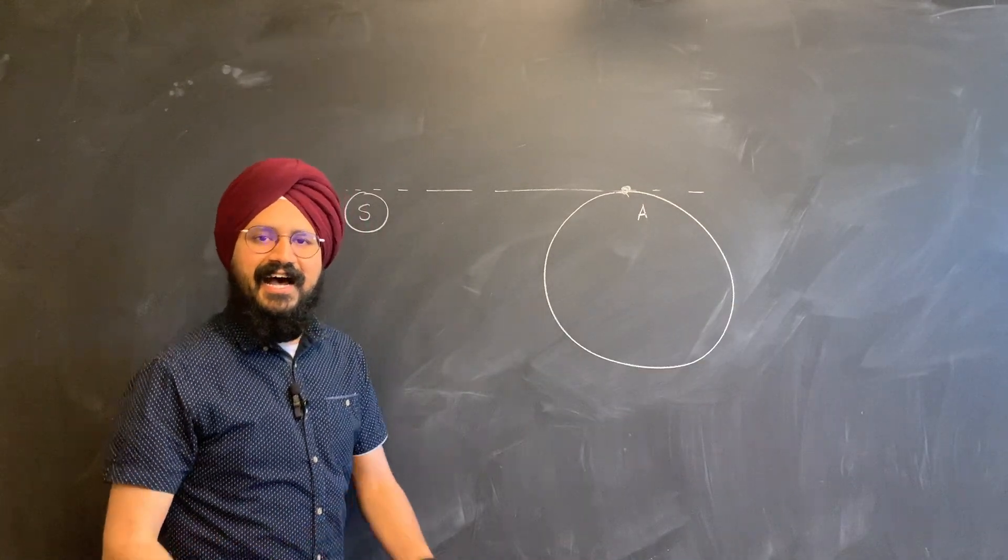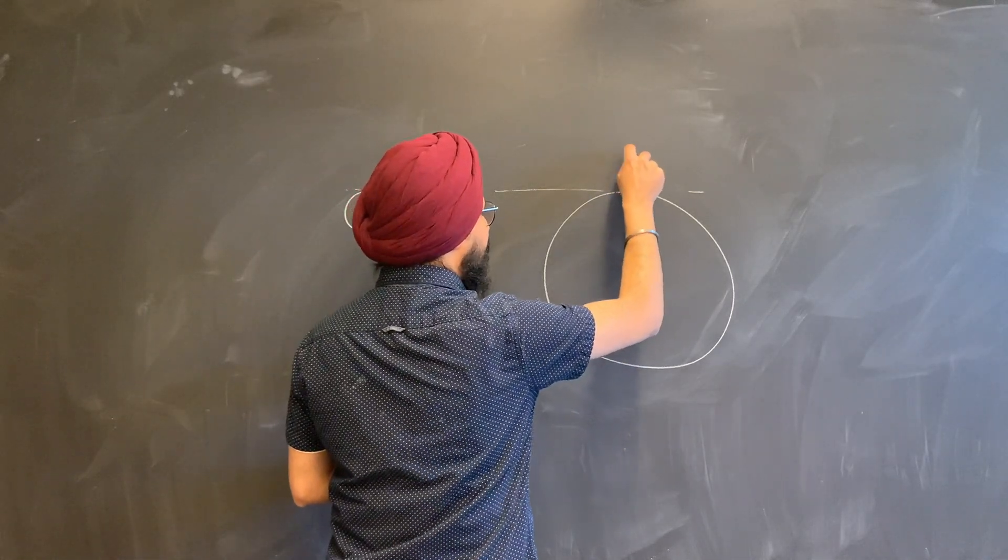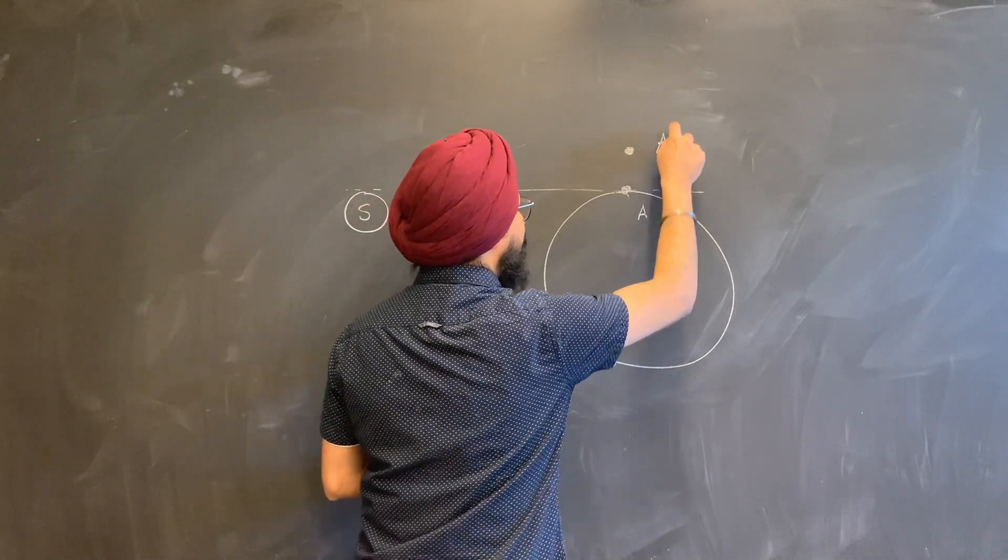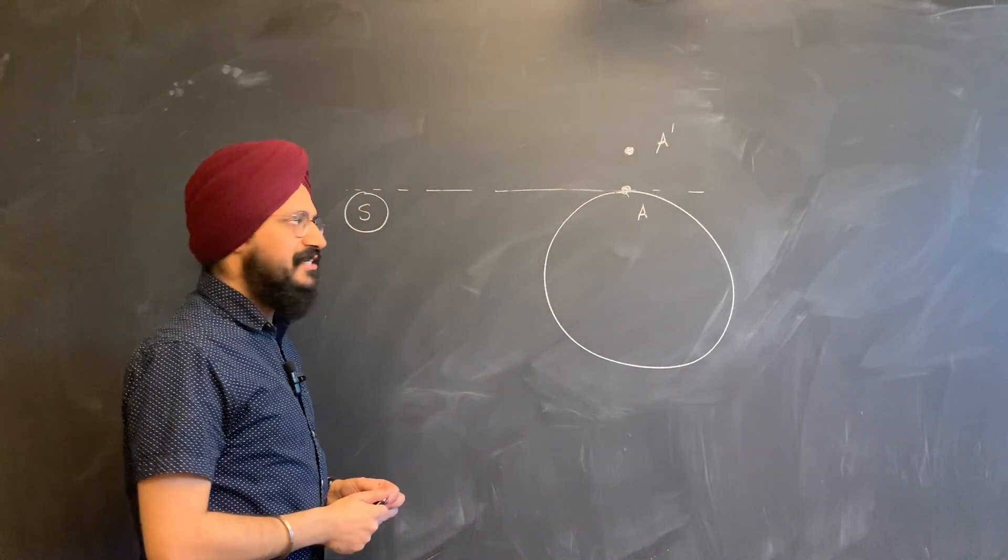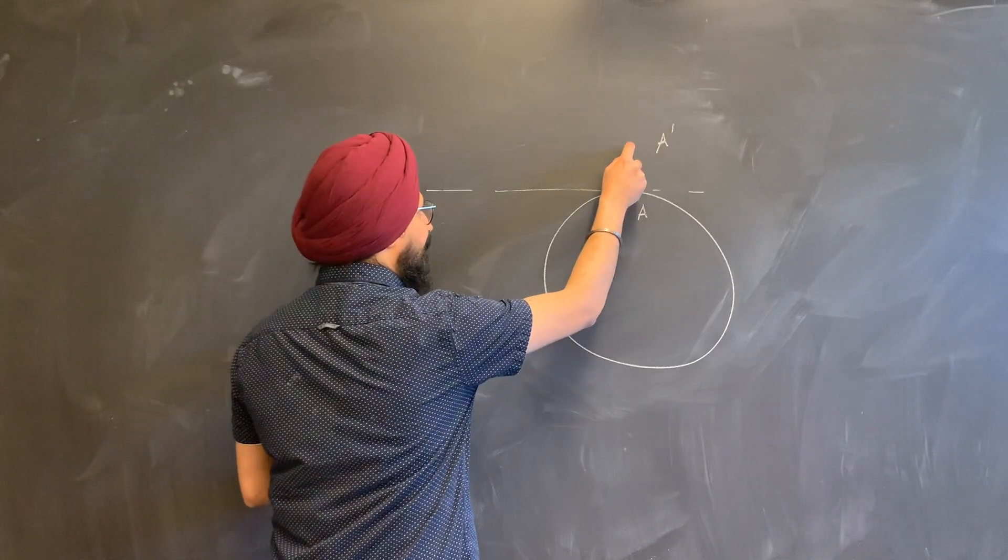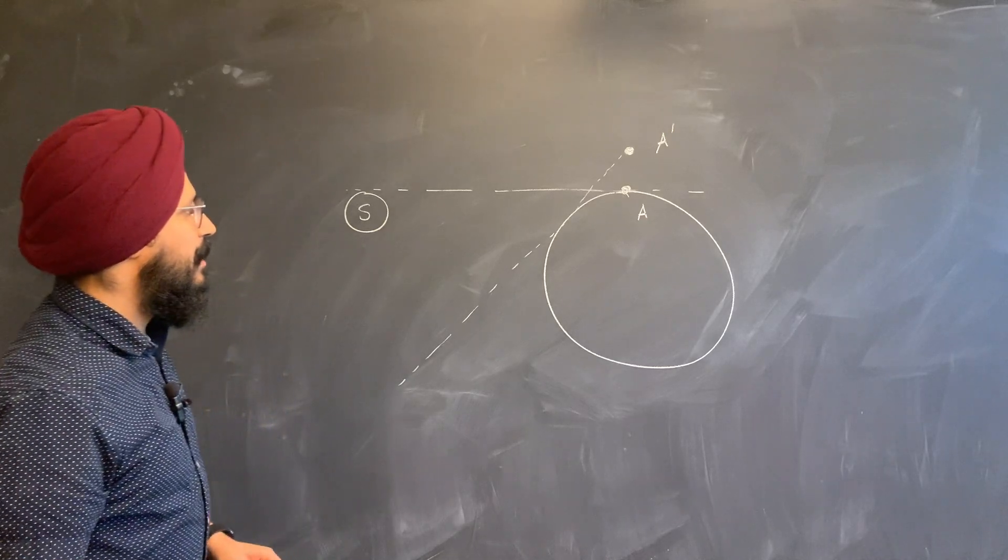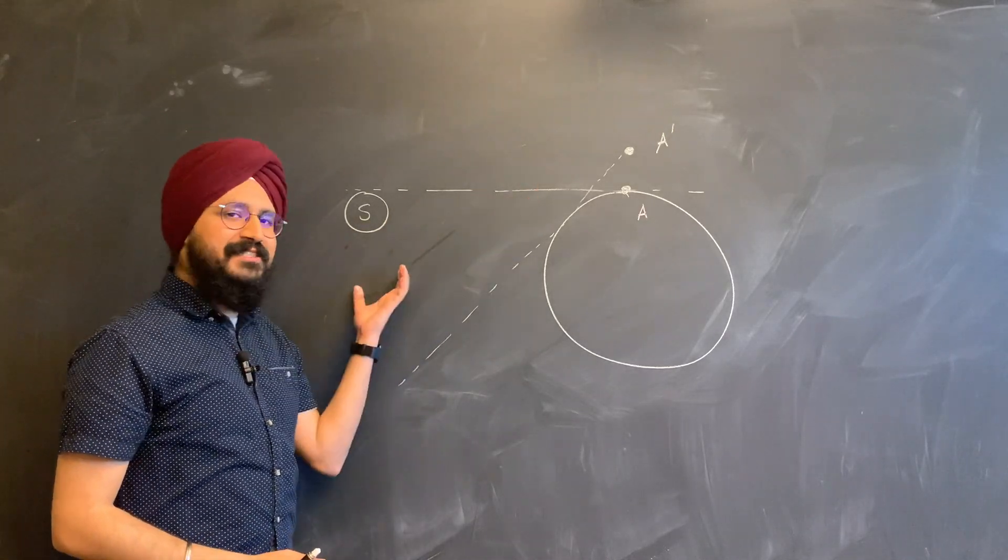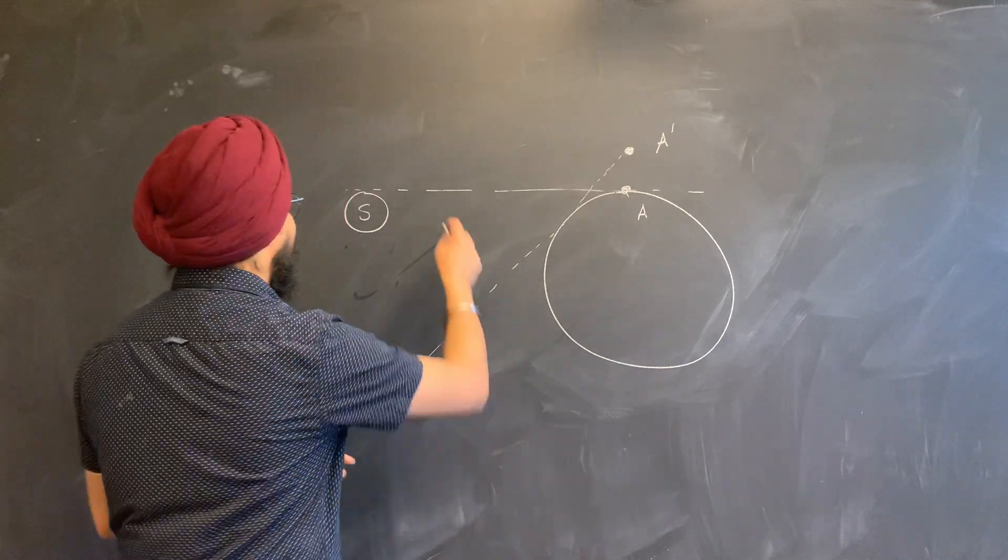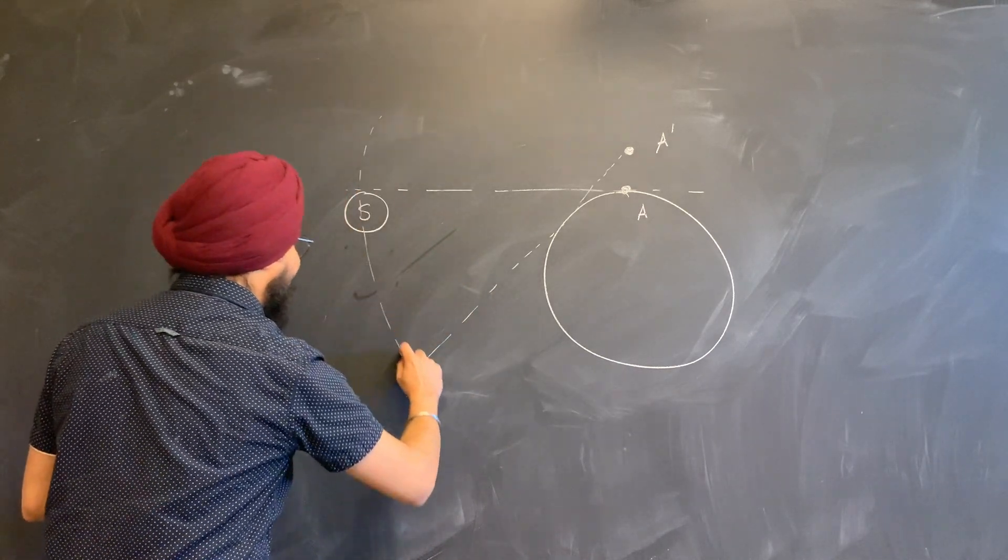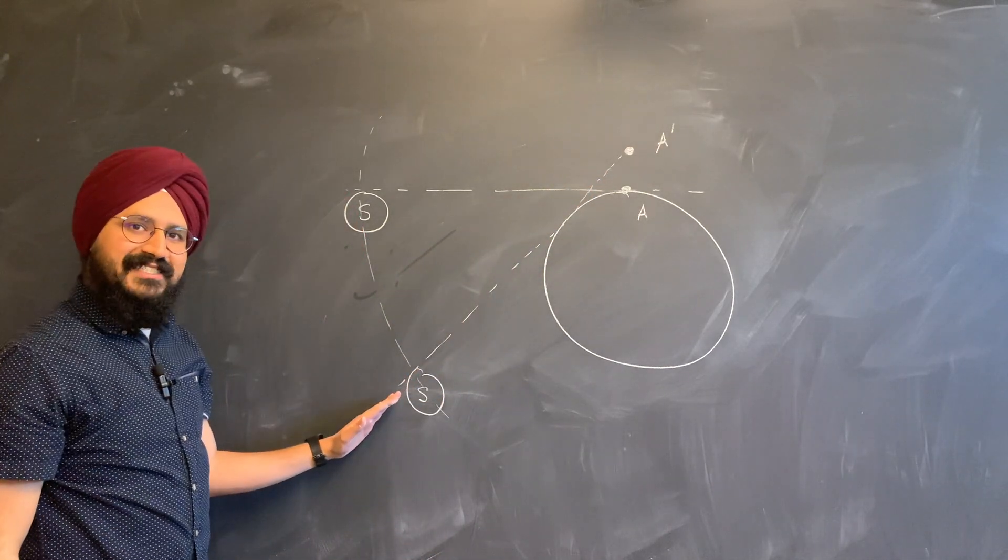So here's the earth, and here I am laying on the beach. That's called that point A for Ashmeet. And as I observe the sunset over my horizon line, the sun just going down below the horizon. The moment that happens, I stand up. So now I have a slightly higher vantage point, which I'm going to call as A' for Ashmeet standing up.